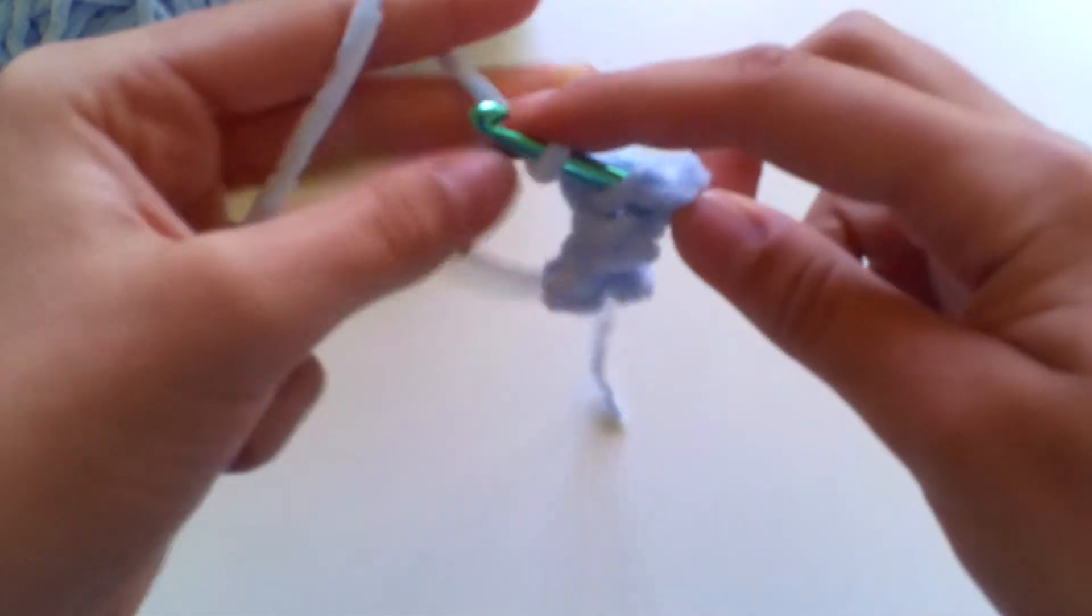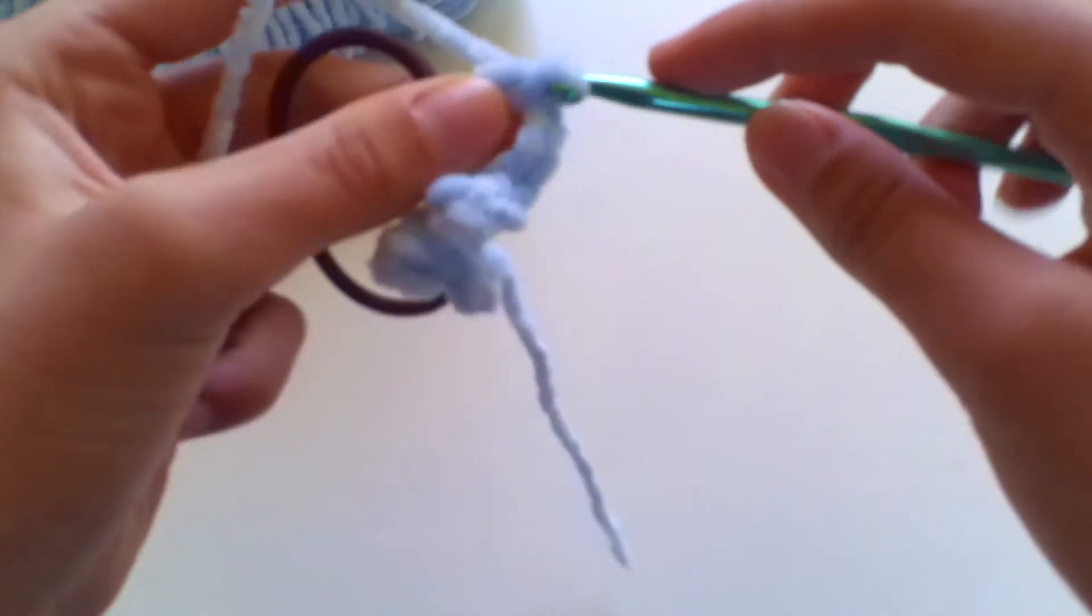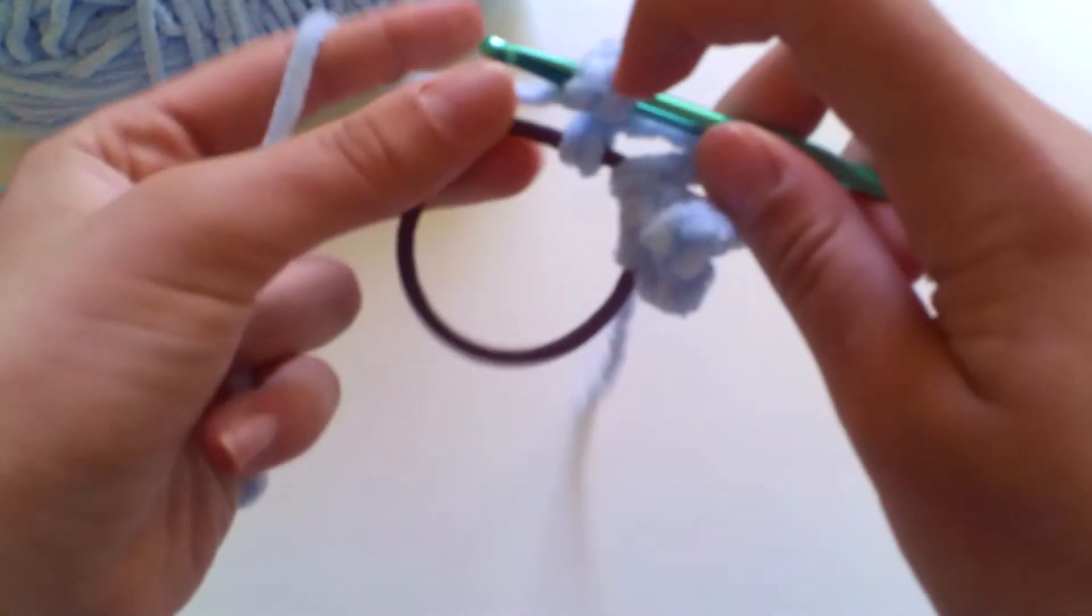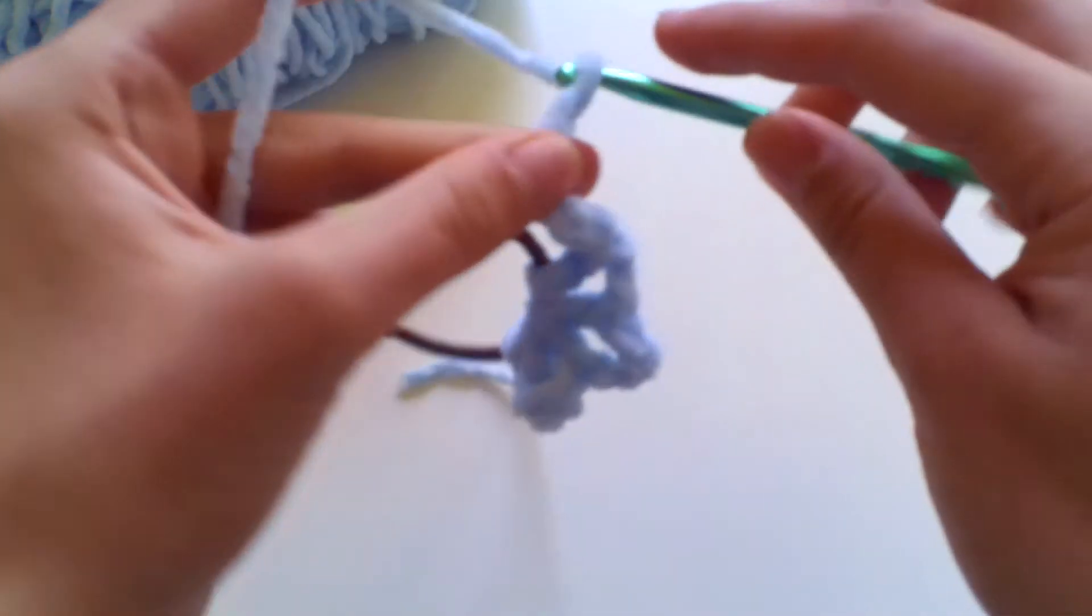But I'd recommend filling up your bobble so you can't really see it anymore and then obviously adding as many more on as you can. The more you do the more scrunchie like it will be and the more kind of folds you will have in your scrunchie. So obviously the more the better but try and get as many as you can.